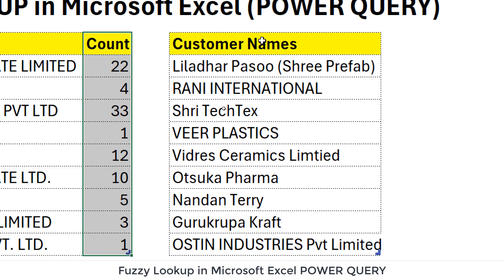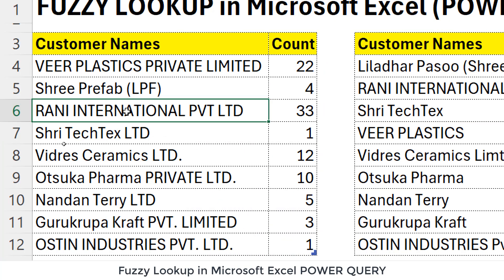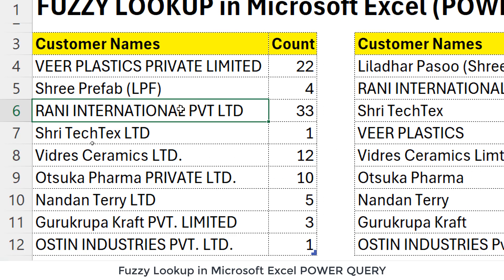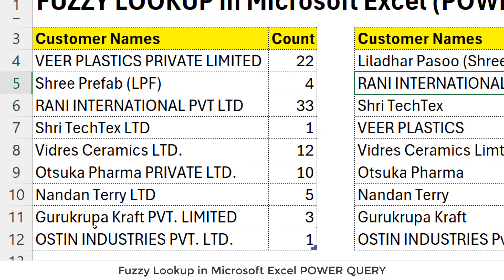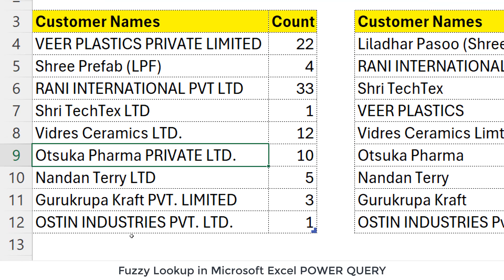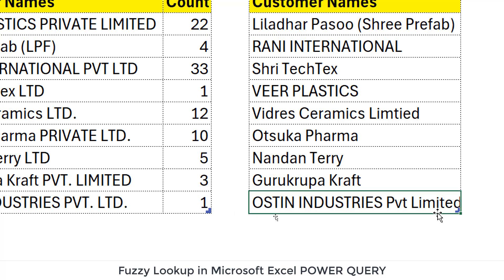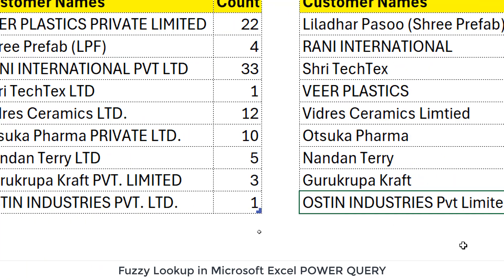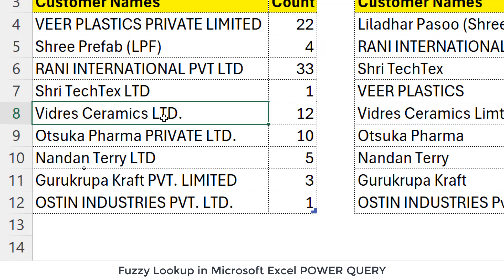We have another column where we need to fetch the values of all these customer names from the previous table, but these are not exactly the same. For example, if you see 'Rani International Private Limited', it's just written as 'Rani International'. Similarly, 'Austin Industries Private Limited' is spelled very differently. Likewise, we have 'Vidris Ceramics Limited' versus 'Vidris Ceramics Ltd'.